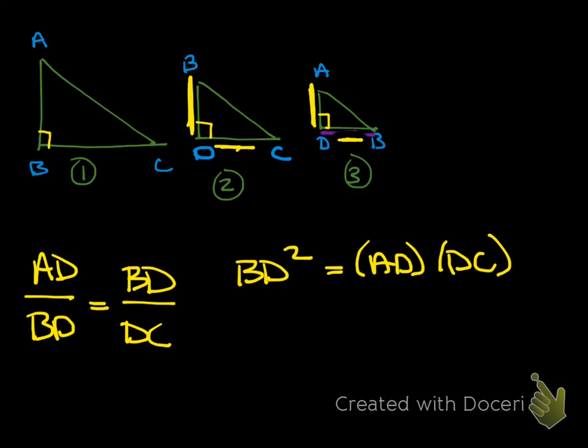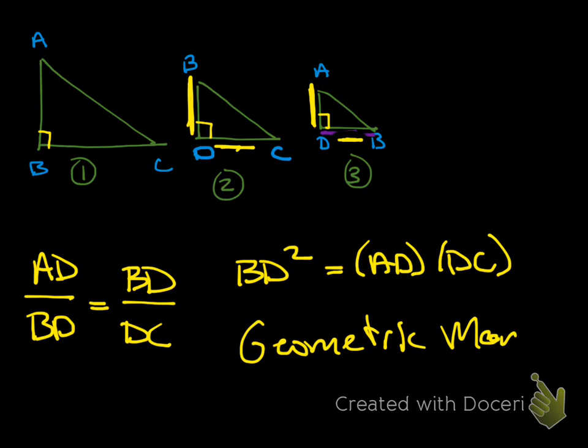So the length of the altitude to the hypotenuse of a right triangle is the geometric mean of the lengths of the two segments of the hypotenuse.